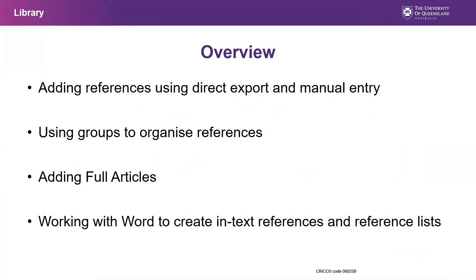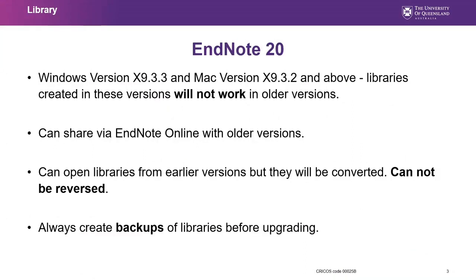The more recent versions of EndNote, which include Windows versions X9.3.3 and the Mac version X9.3.2 and above — the libraries in which you store your references created in these versions will not work in older versions. You are however able to share libraries created in these earlier versions with users of older versions using EndNote Online. When you open a library from these earlier versions in newer versions, it will be converted by EndNote. Please note that once converted, these libraries cannot be reversed, so you should always create backups before upgrading.